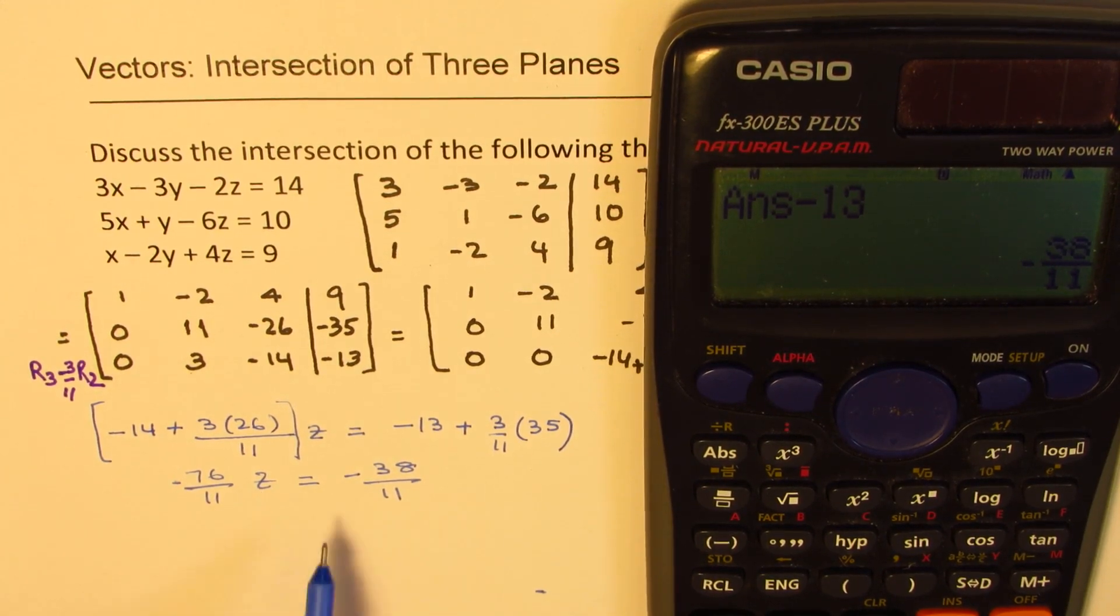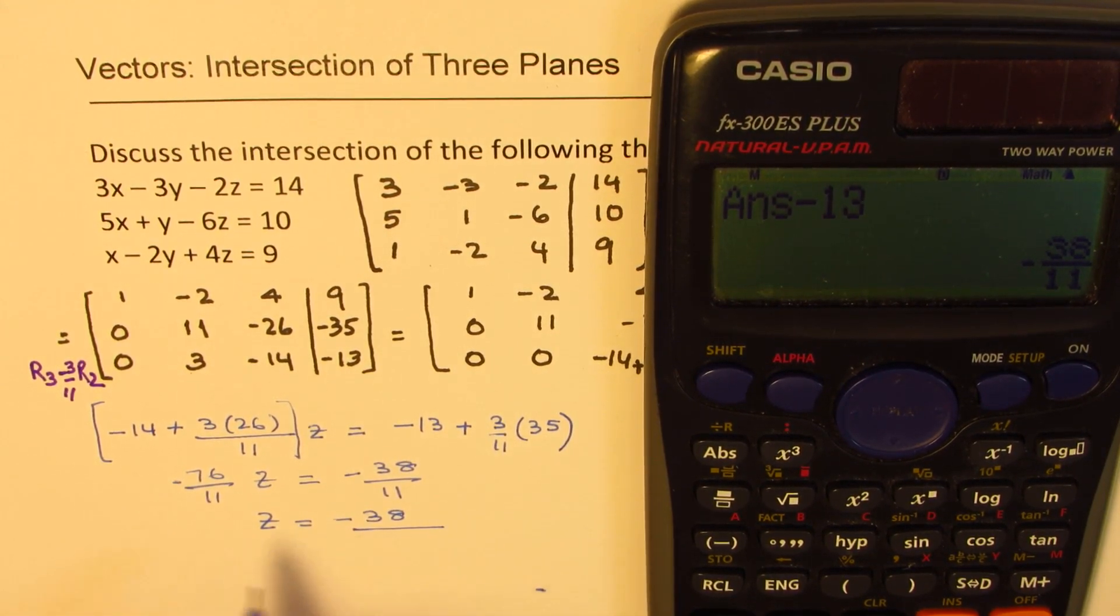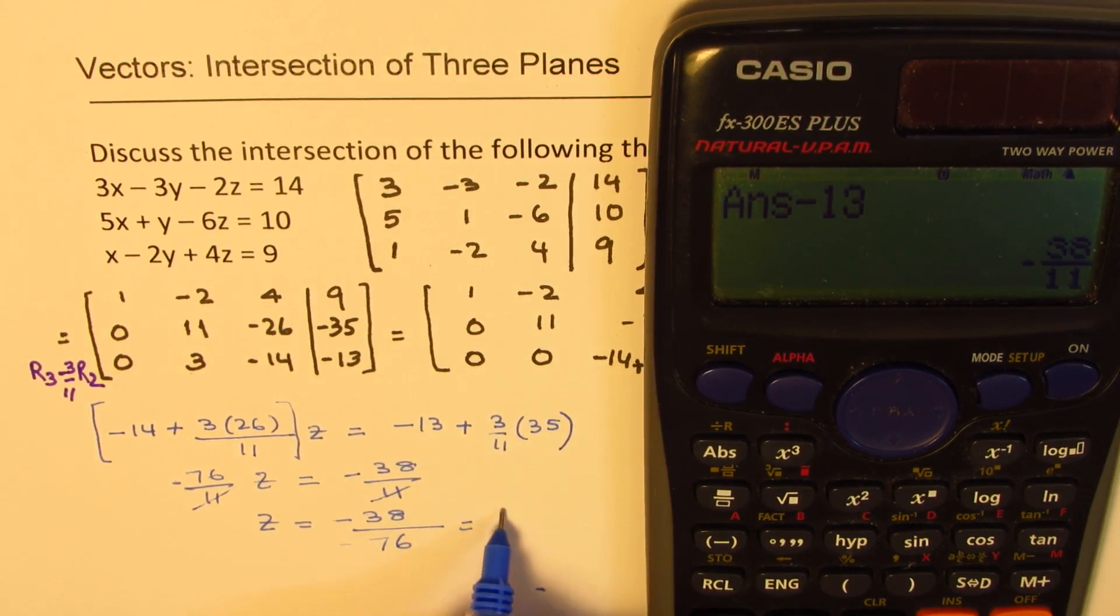Now from here, you can solve for z. So the value of z basically is equal to minus 38 divided by minus 76. So 11, 11 cancels. So you get this, which is equal to half.